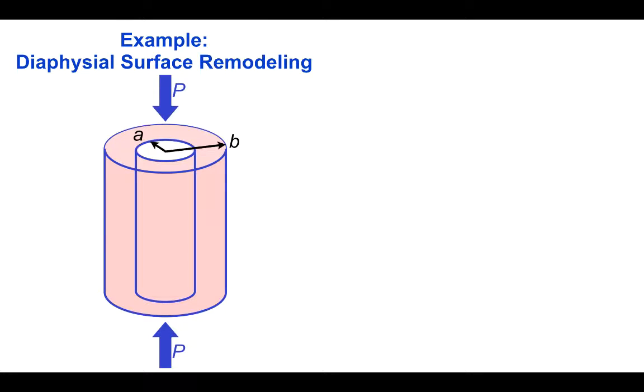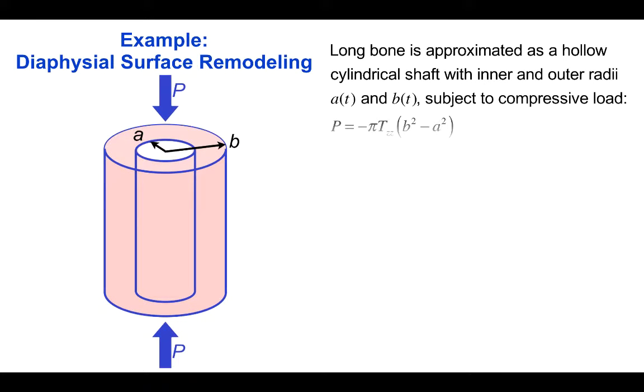In this example, we'll look at the problem of surface remodeling of the diaphysis or shaft of a long bone. The long bone is approximated as a hollow cylindrical shaft with inner radius a and outer radius b.